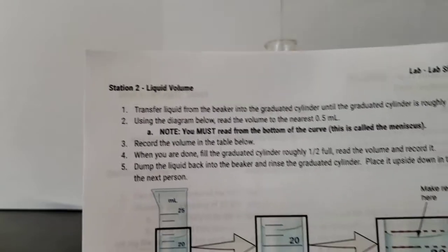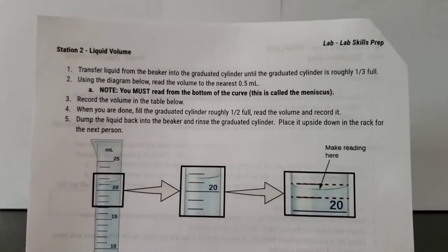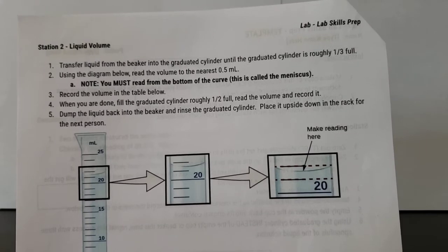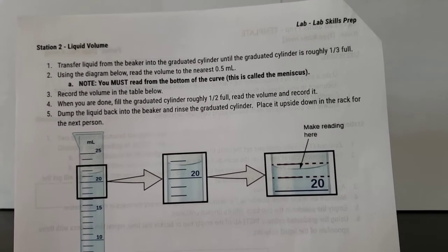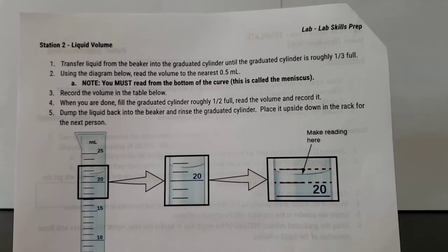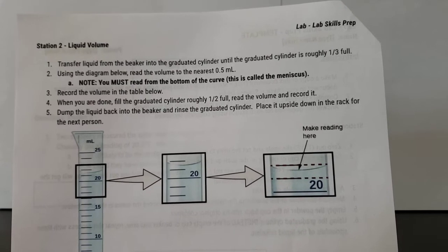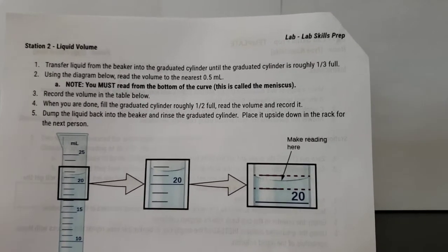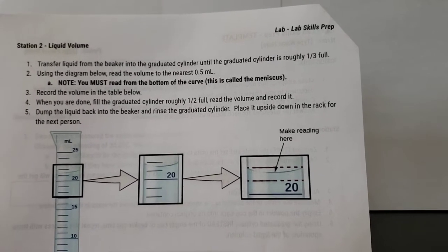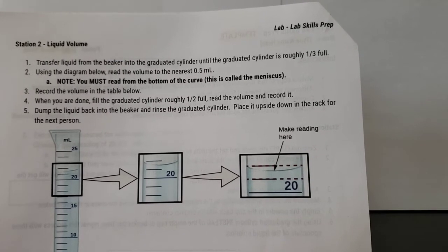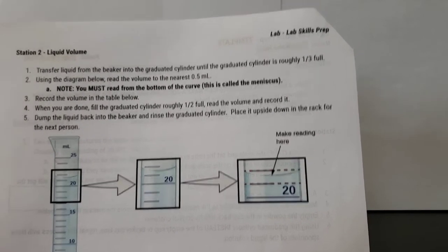So on your digital version of this handout, make sure that you go over here to page two and look at the instructions. So again, we are going to be going through this as if you were here in class with us. The first step says to transfer liquid from the beaker into the graduated cylinder until the graduated cylinder is roughly one third full.